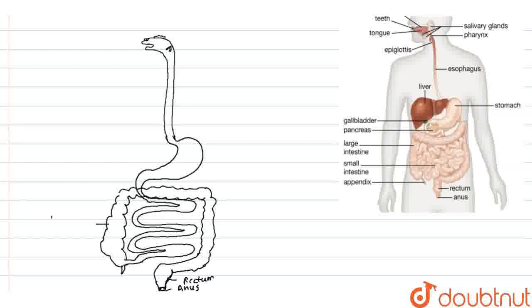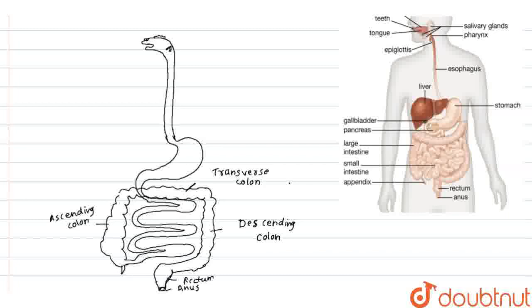This is ascending colon, this is transverse colon, and this is descending colon. All these three parts make the large intestine.